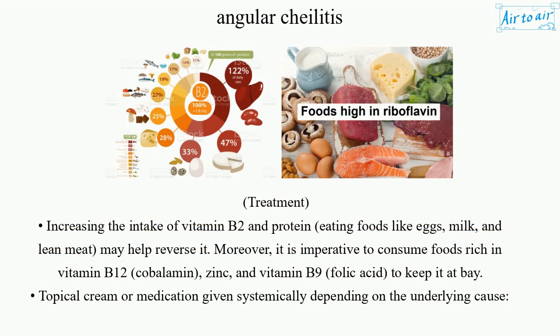Treatment. Increasing the intake of vitamin B2 and protein — eating foods like eggs, milk, and lean meat — may help reverse it. Moreover, it is imperative to consume foods rich in vitamin B12, cobalamin, zinc, and vitamin B9, folic acid, to keep it at bay.